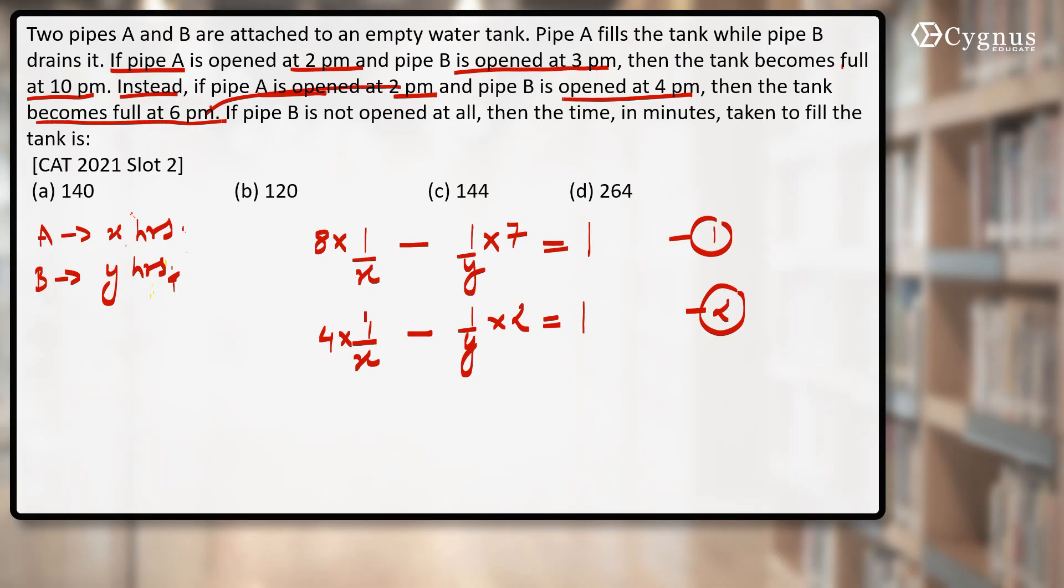It's a simple question of a system of equations. I'm left with two equations and I need to eliminate one of the variables. He's asking about what if pipe B is not opened at all, then the time in minutes taken to fill the tank is how much. That is, we're not going to turn on pipe B. He's asking the value of x - pipe A will take how much time to fill it completely if you are not going to open pipe B, which was an empty pipe.